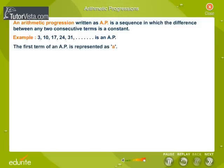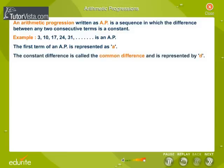The first term of the AP is represented as 'a'. A is equal to 3 in the example. The constant difference is called the common difference and is represented by 'd'. In the example, d is equal to 10 minus 3 is equal to 7.